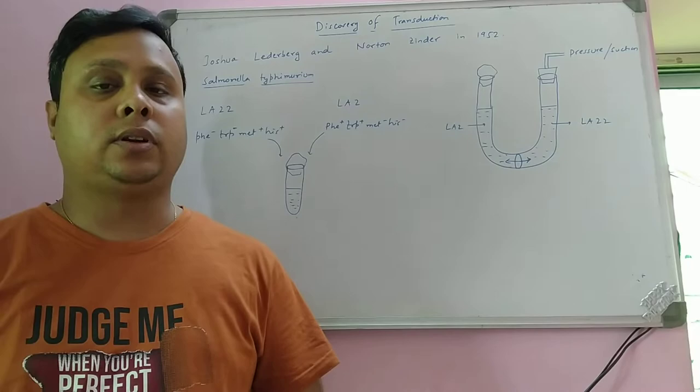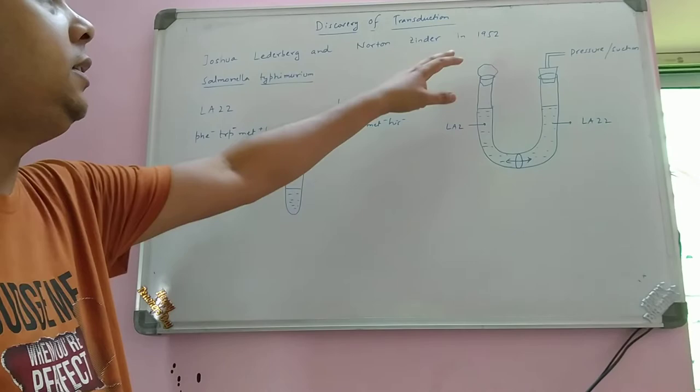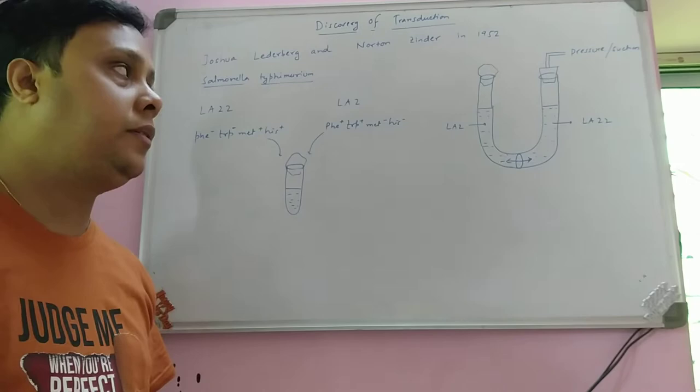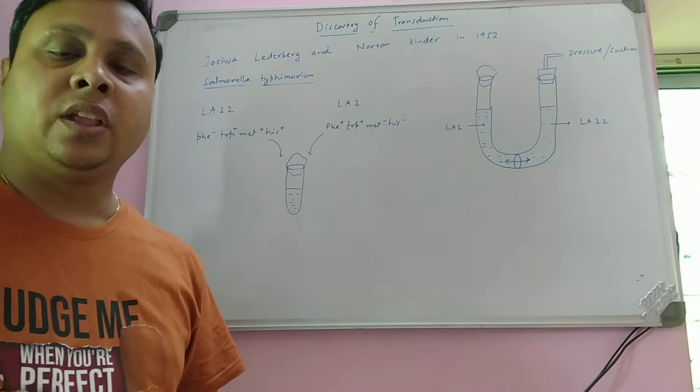Transduction was discovered by Lederberg and Zinder in 1952. They used a bacterium known as Salmonella typhimurium, which has some special properties. They took two different strains of Salmonella typhimurium: one called LAT22 and another known as LAT2. Both are auxotrophic strains.